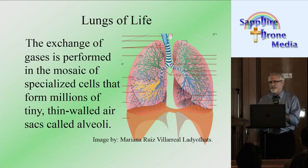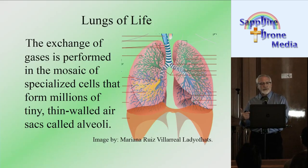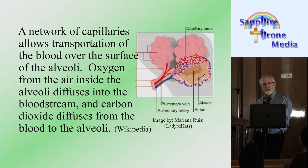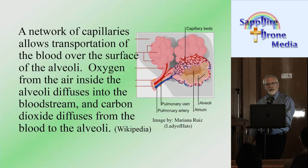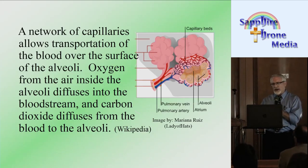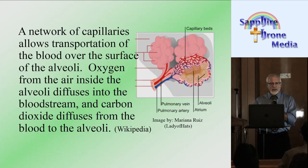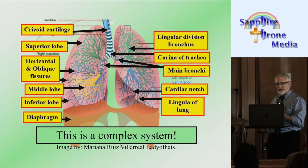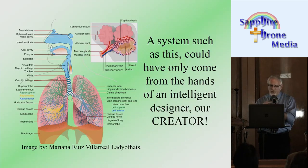The exchange of gases is performed in a mosaic of specialized cells that form millions of tiny thin-walled air sacs called alveoli. A network of capillaries allows transportation of the blood over the surface of the alveoli. Oxygen from the air inside the alveoli diffuses into the bloodstream, and carbon dioxide diffuses from the blood to the alveoli. A system such as this could have only come from the hands of an intelligent designer — our creator, God.